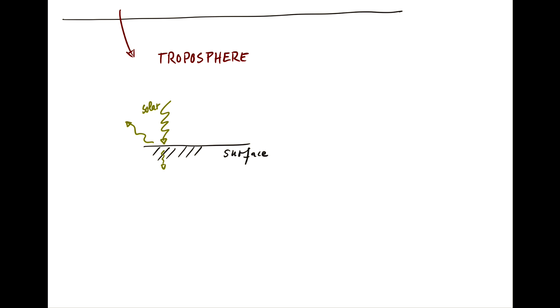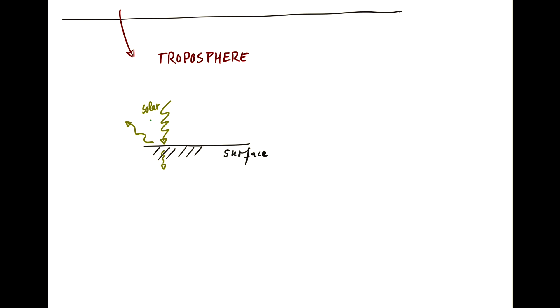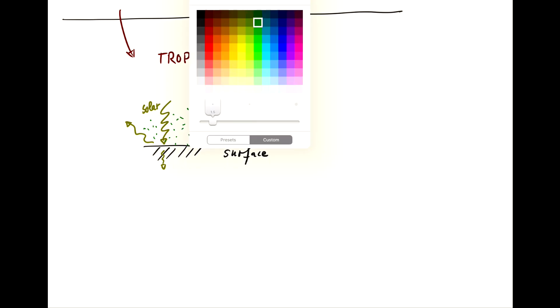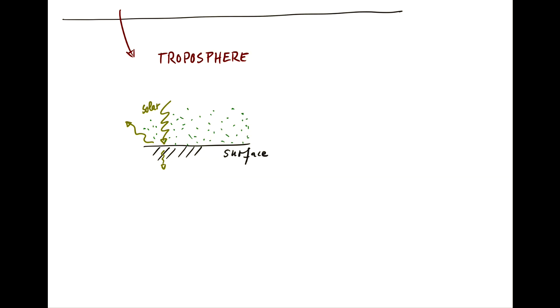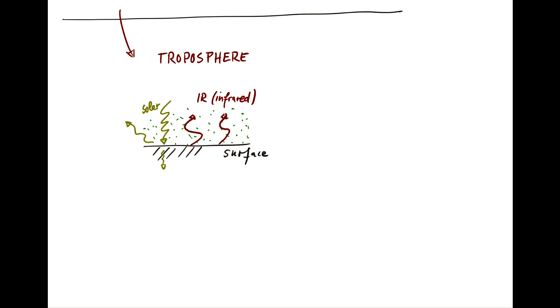The troposphere is mostly transparent for solar radiation, so it can go through and back out without interacting too much with the gas in the troposphere. Then we have infrared long-wave radiation coming back out.